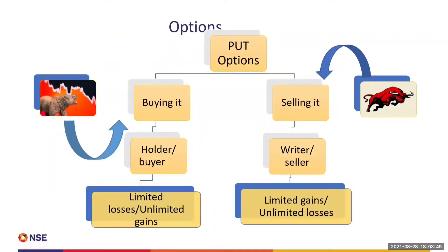The buyer of a put option has a bearish view on the market. The buyer can have limited losses — the losses are limited to the premium paid to the seller. The writer or seller of the put option has a bullish view on the market. The seller's gains are limited to the premium received, but can potentially have unlimited losses.